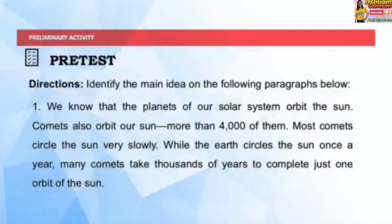Pretest. Directions: Identify the main idea in the following paragraphs below. Number 1: We know that the planets of our solar system orbit the sun. Comets also orbit our sun — more than 4,000 of them. Most comets circle the sun very slowly. While the earth circles the sun once a year, many comets take thousands of years to complete just one orbit of the sun.